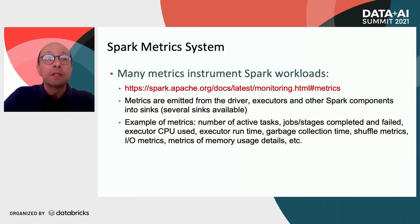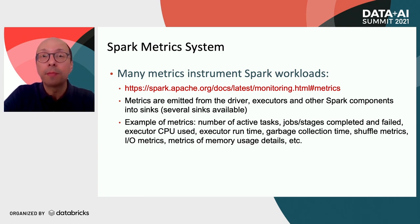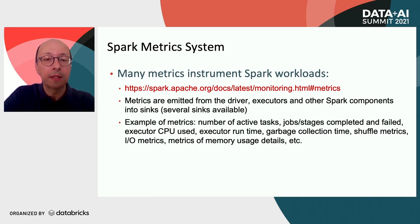Spark metrics are emitted from the driver, the executors, and other components into configured sinks. There are several sinks available, as we will see. Metrics are many and varied — they cover many details related to Spark execution. For example: number of active tasks, jobs and stages completed and failed, executor CPU runtime, garbage collection, shuffle metrics, IO metrics, and memory metrics.